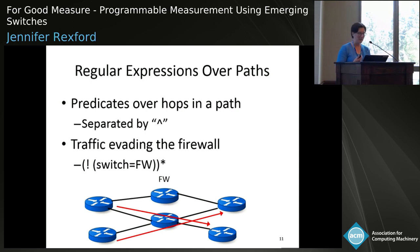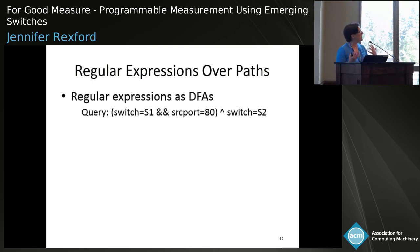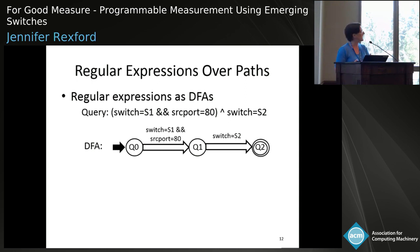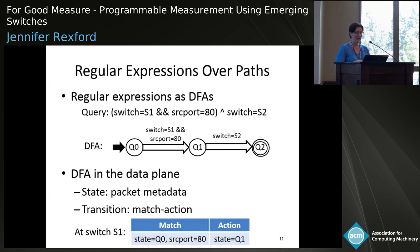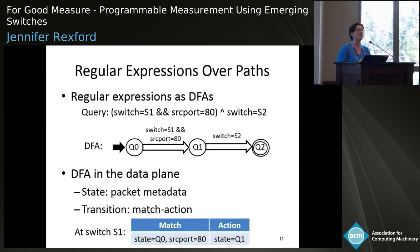These modern switches have capabilities to do exactly that. A regular expression can be naturally encoded as a deterministic finite automaton. Starting at an initial state, if the first condition holds, transition to a second state; if the second condition holds after that, you're in an accepting state where you collect statistics. This can be mapped into data planes by taking the state — Q0, Q1, Q2 — and using it as a tag on packets as they go from one hop to the next, and using the match-action tables in each switch to implement state transitions. So you can take a network-wide regular expression and distribute it as a collection of match-action tables and packet metadata.